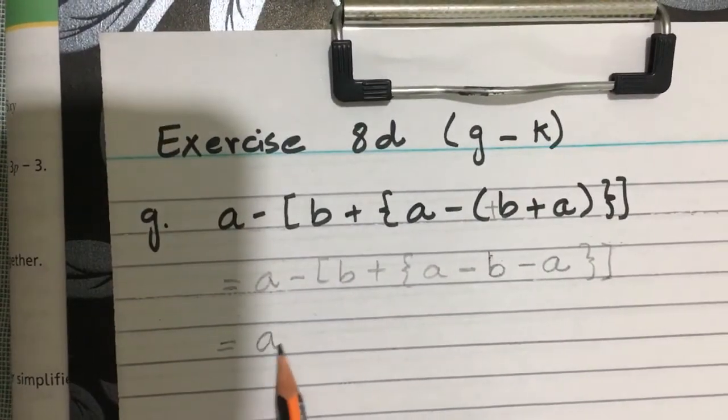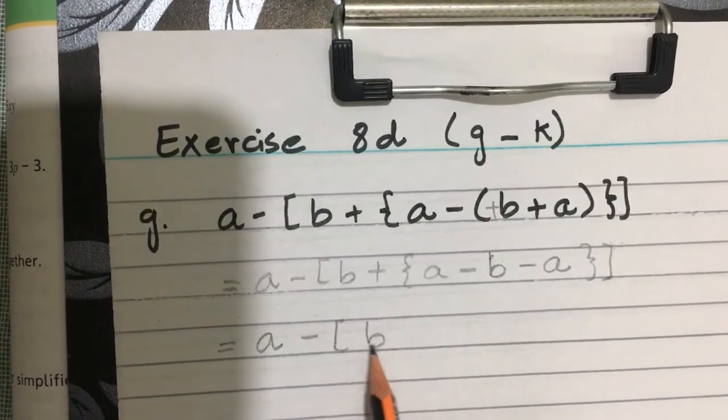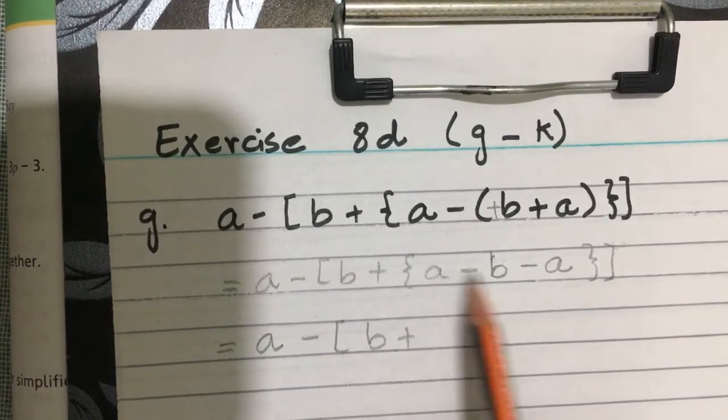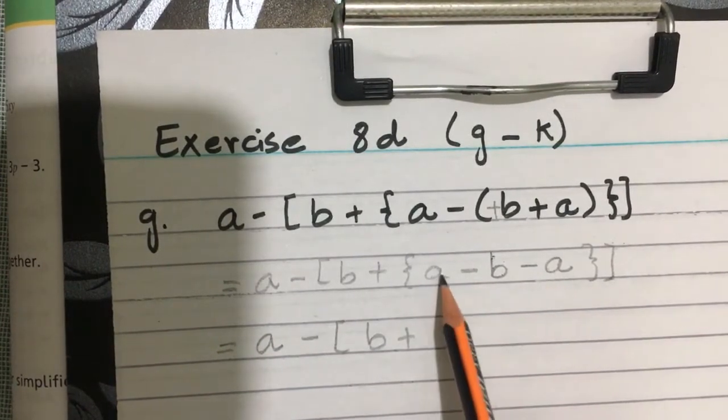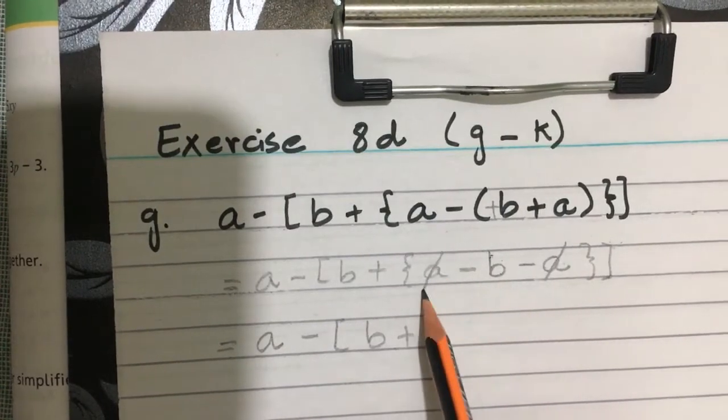Second step is: a minus b plus. These are two same so plus minus will cancel each other. Here the answer will remain minus b.